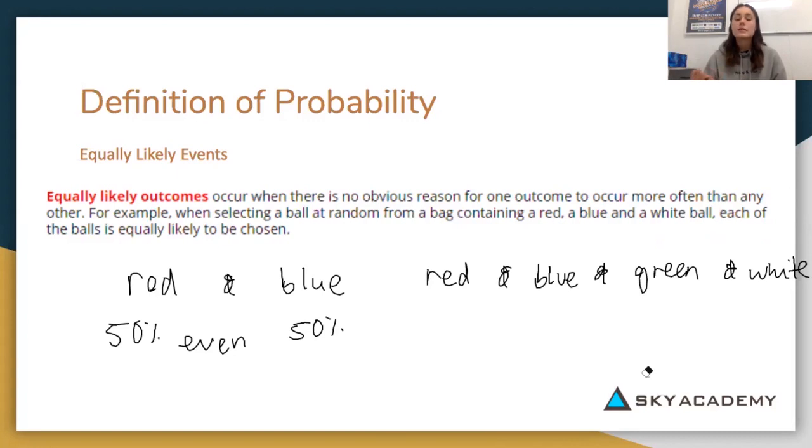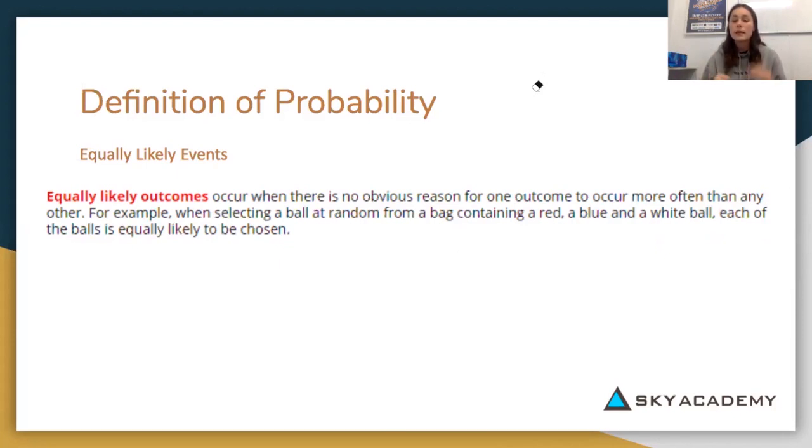This however changes, as we saw before, if one event has a higher chance of being selected, then it does not become even. So that's something to keep in mind that even does not just mean two, does not mean 50 and 50. It just means the same amount of chance, the same chance of selecting that.